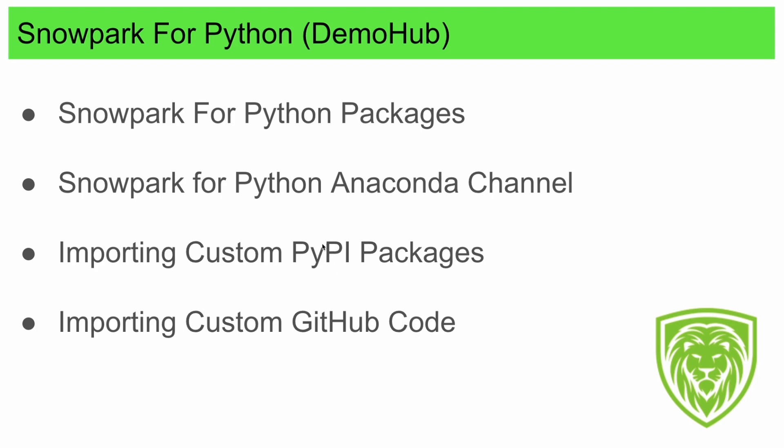There is a caveat: it has to be a Python native package. The package cannot have dependencies on other languages. PyPI is unique because a Python package might use Java, Scala, C++, or C#, which are not truly Python.